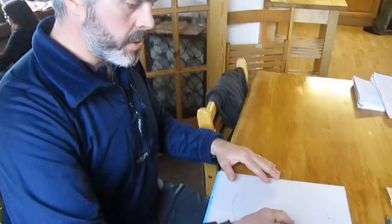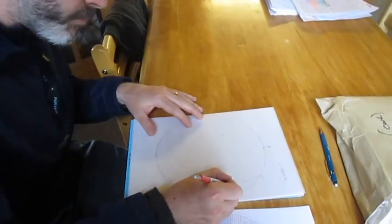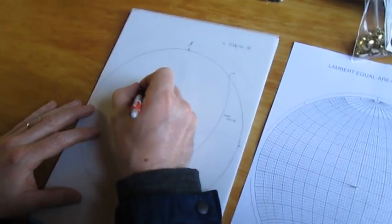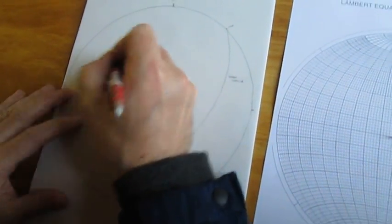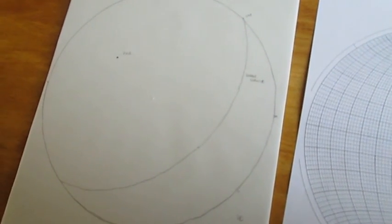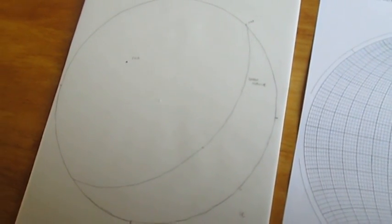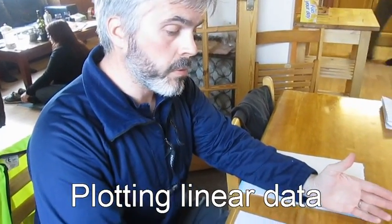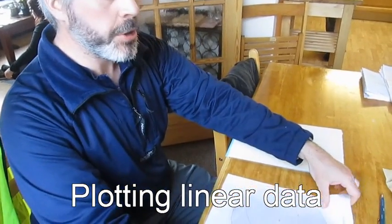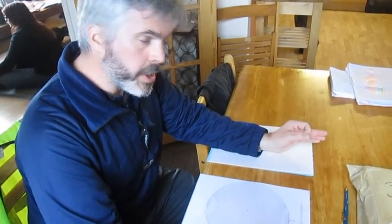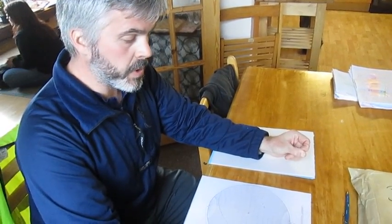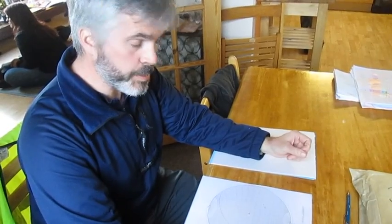So the stereonet without the background template would look like this. So we have a great circle and a pole. That was an example of plotting planar data. So of course the other type of data we can have is linear data. And whereas planar data can be plotted as either a great circle or a pole, linear data can only be plotted as a point.